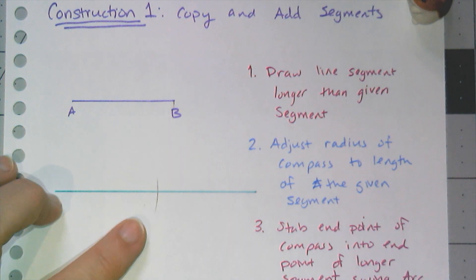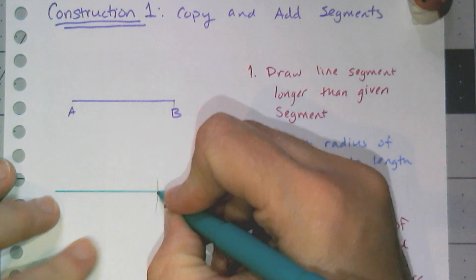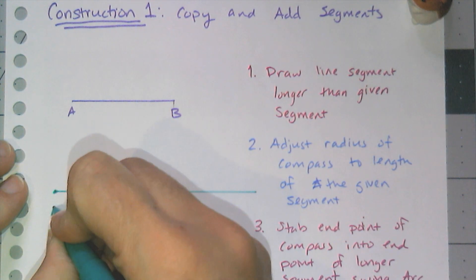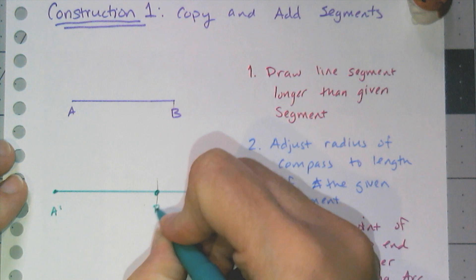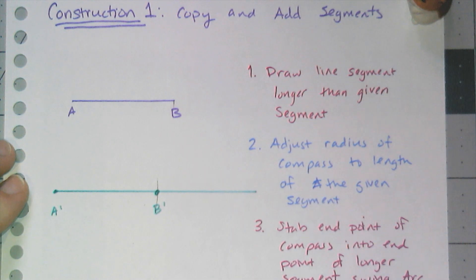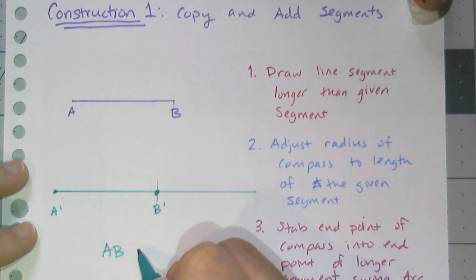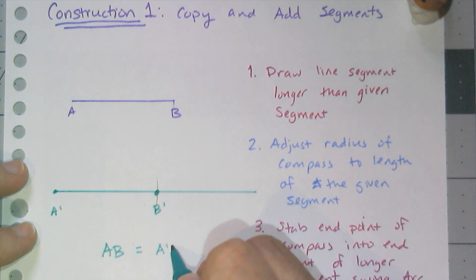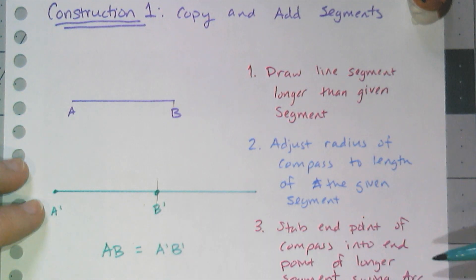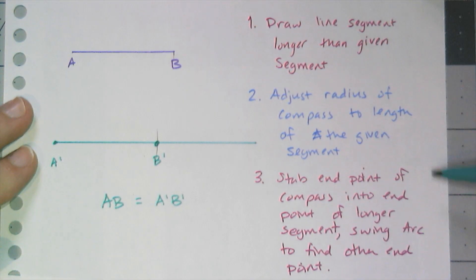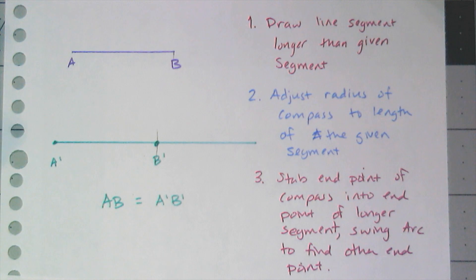That radius is the length of AB, so if I put my point there and I put my point there, I have A prime and B prime, which are copies of A and B, and I can say that AB is equal to A prime B prime — those are two equal length segments. I've written out the steps here, so you should pause and write down the steps so that you remember them for the future.